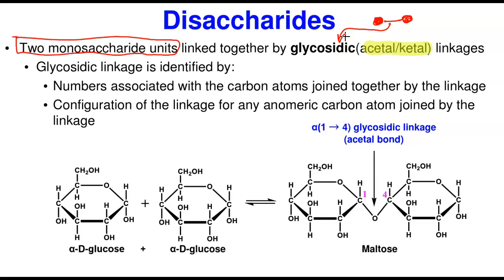Glycosidic linkages are designated by the numbers associated with the carbon atoms joining them together — two carbohydrates must join at their carbon atoms. They are also designated by the configuration of the linkage for the anomeric carbon atom. You identify them by their numbers and then by their configuration — whether the OH group is placed above or below. The two anomeric configurations are alpha and beta.